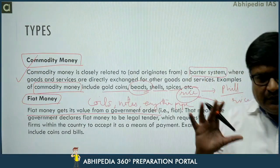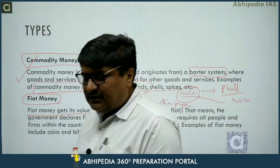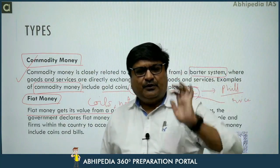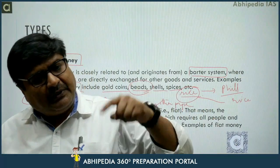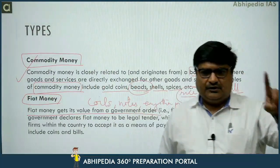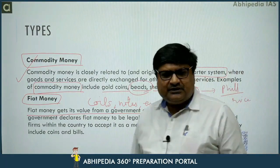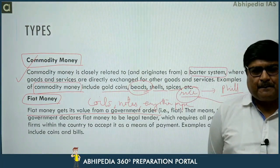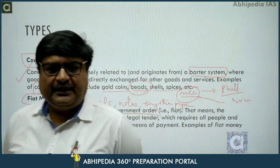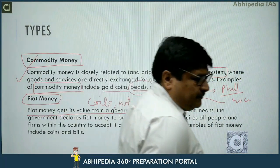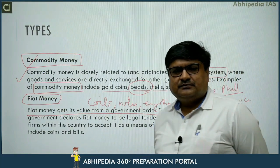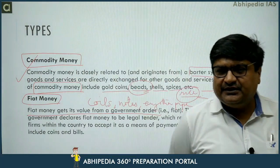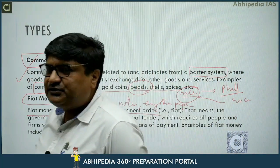Just to involve you — coins and notes are valued because the government declares their value, and we believe that value. So they hold value by virtue of a government order — by virtue of being fiat money. Any other form of fiat money? Something whose value comes from a government order? Government securities are an example of fiat money. A cheque, however, is not a fiat money.